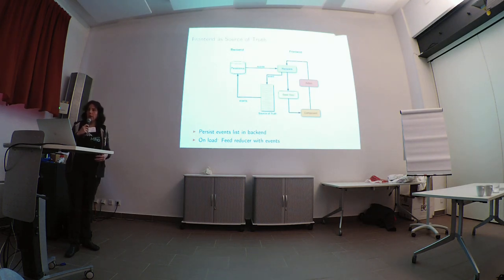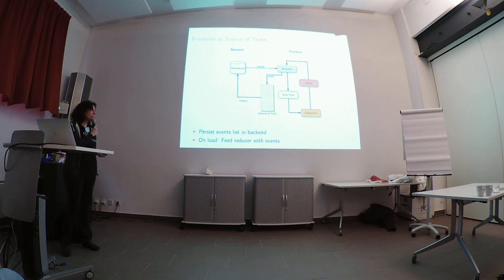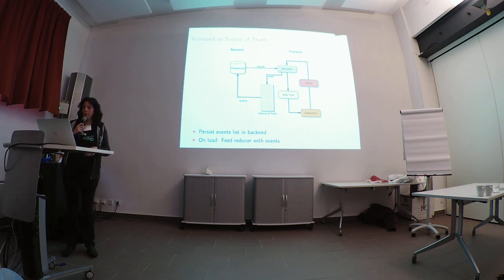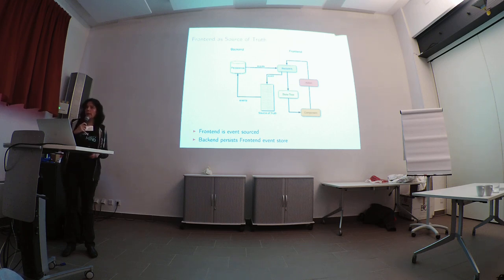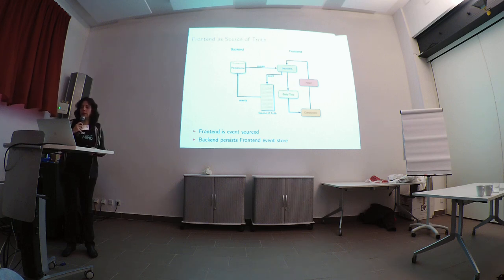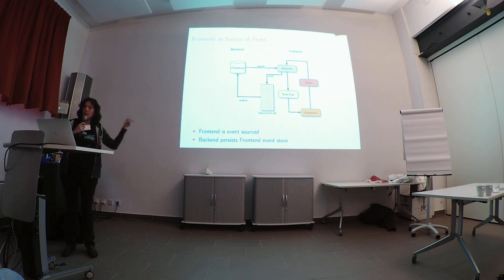When I want to persist this, I just send this event list to the backend and say 'hold this for me please until I ask for it again'. The next time I start, I ask for this list, feed it into my reducers, and they know what to do with this data — that's how I initially created my current state. So I feed them the list of events again and get back to the current state. Now we have an event-sourced frontend where the backend is only there to persist the event source list.